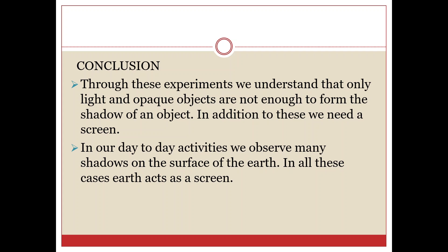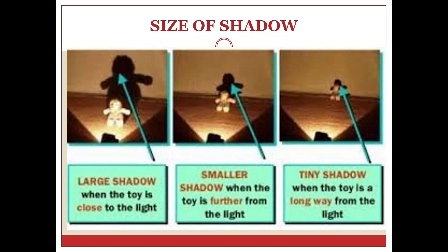In our day-to-day activities, we observe many shadows on the surface of the earth. In all these cases, earth acts as a screen. Did you observe, children, that the size of the shadow changes in relation to the source of light? A large shadow is formed when the toy is close to the light, as you can observe here.